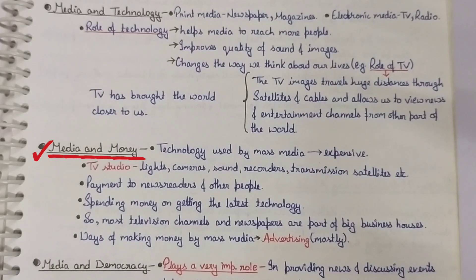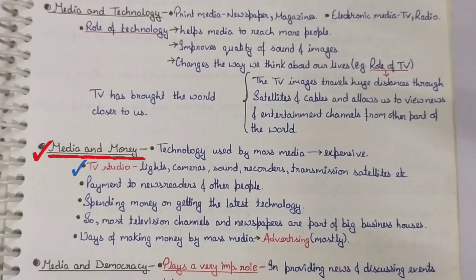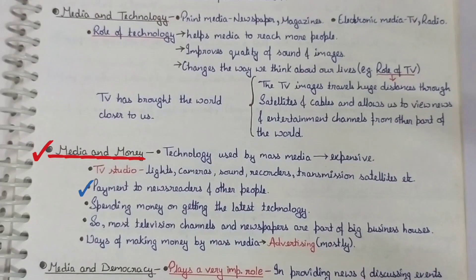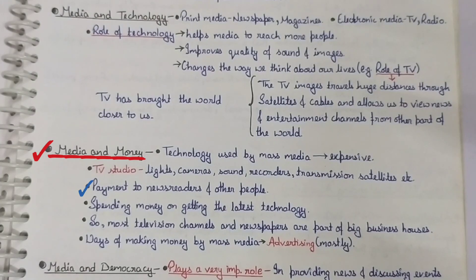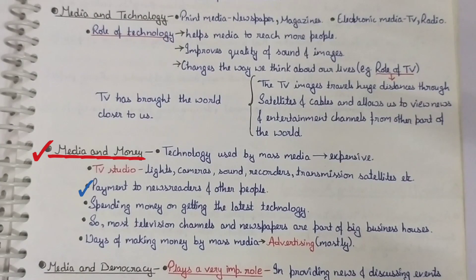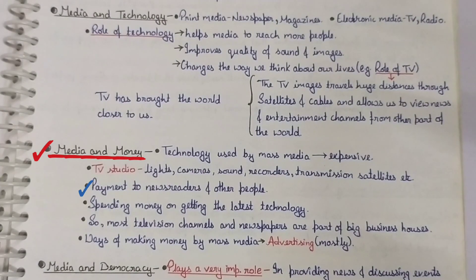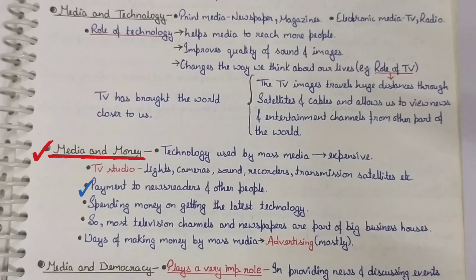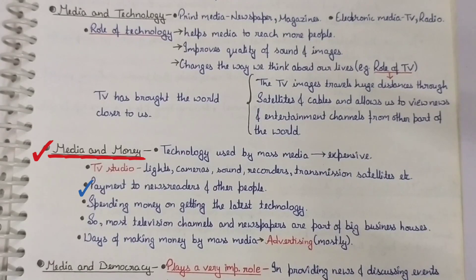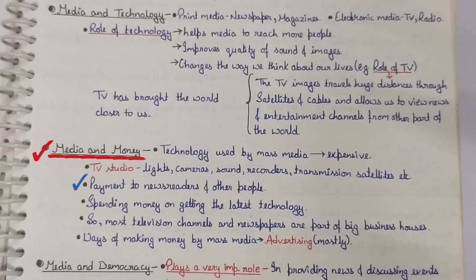In media and money, there is a TV studio with lights, cameras, sound recorders, transmission equipment, and satellites — all of these involve costs. There are also payments for news readers, news reporters, co-editors, and people who work in the TV studio. All these things make our media expensive. This is the relation between media and money.